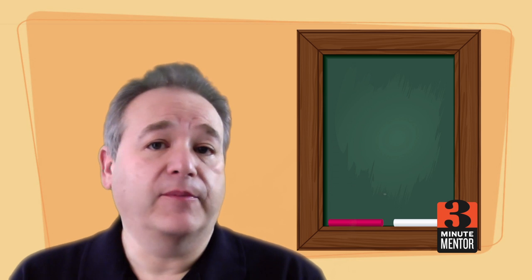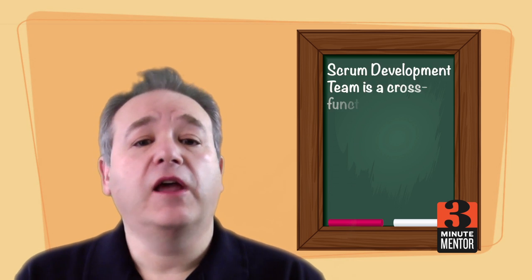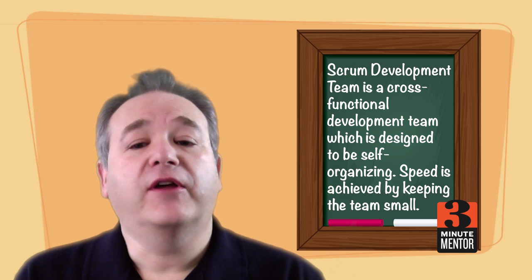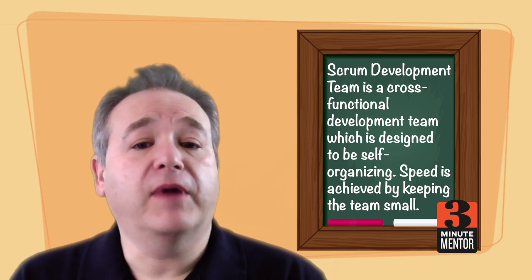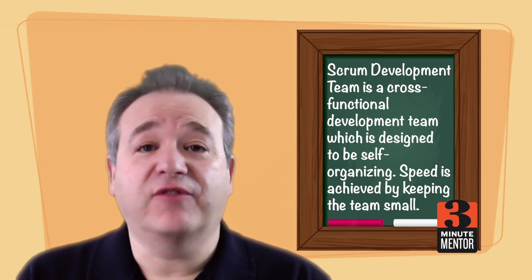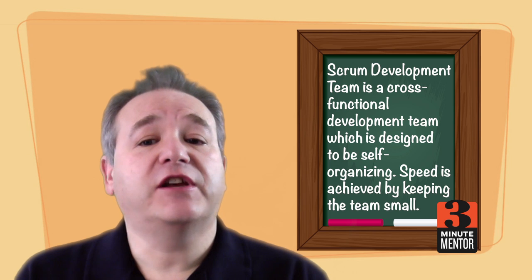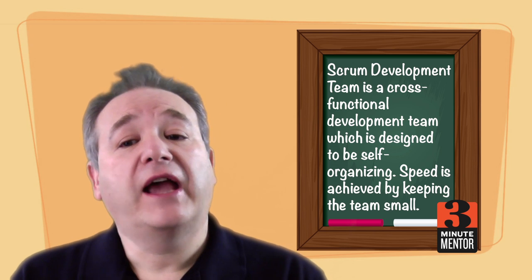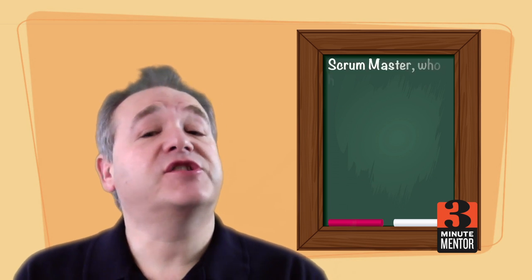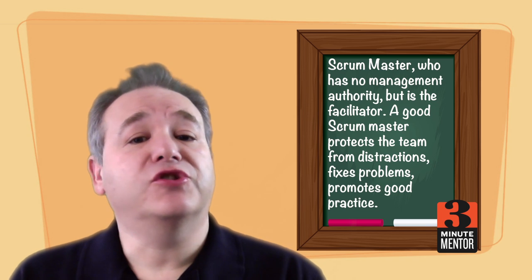The second is the scrum development team itself. This is a cross-functional team made up from many different people which is self-managing and self-organizing. Speed is achieved through keeping the team small and without a formal leader.